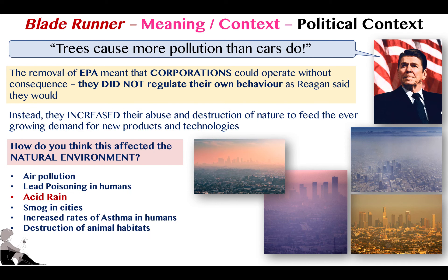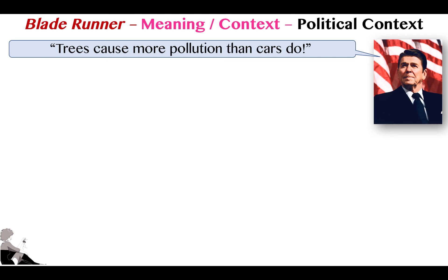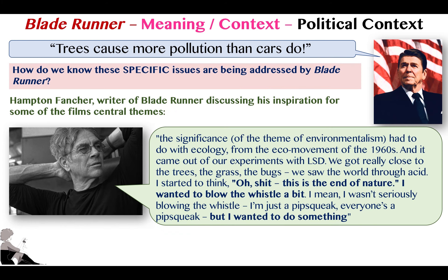Linking back to Blade Runner: with the introduction of Reagan's policies we see the destruction of the environmental agency, replaced by corporate power. Corporations did not regulate themselves — they approached nature with a blitzkrieg approach, extracting as much as possible. In the 80s we see a massive rise in environmental issues: air pollution, lead poisoning in humans, acid rain — a direct consequence of increased toxins from smokestacks and corporate growth — smog in cities like LA, increased rates of asthma, and destruction of animal habitats.